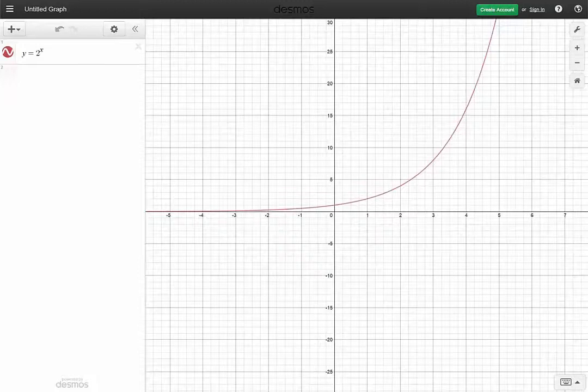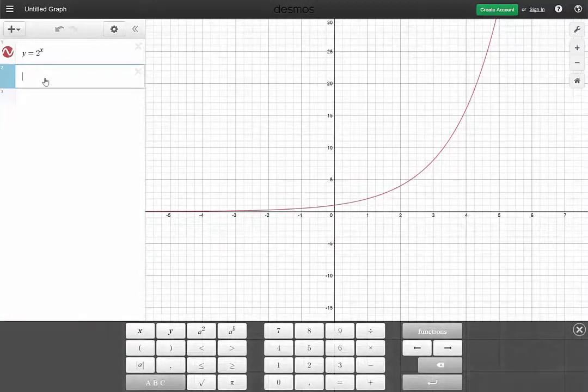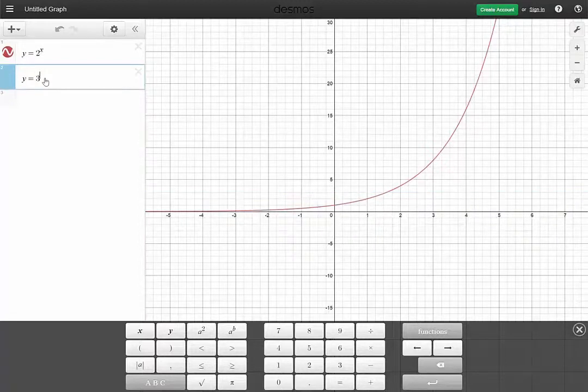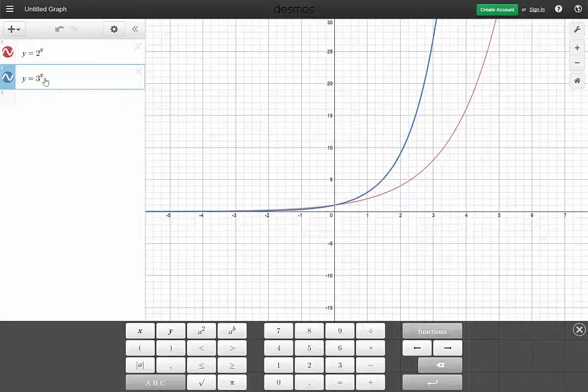Okay, so let's look at that. We have that function. What happens when we change the base and consider y equals 3 to the x? We get a function that increases at a faster rate but has the same general shape.